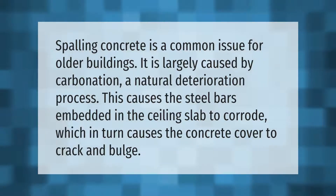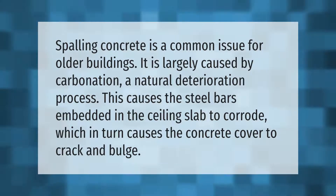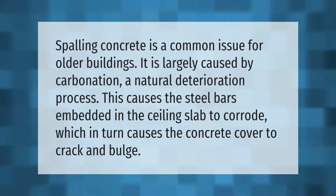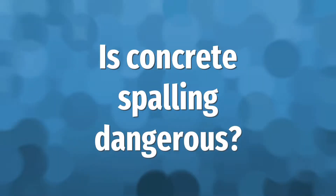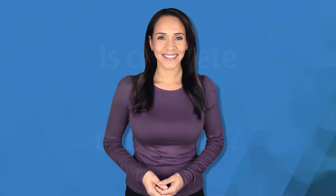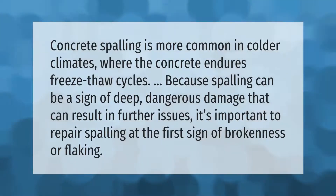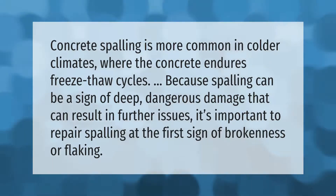Carbonation causes the steel bars embedded in the ceiling slab to corrode, which in turn causes the concrete cover to crack and bulge. Concrete spalling is more common in colder climates where the concrete endures freeze-thaw cycles.